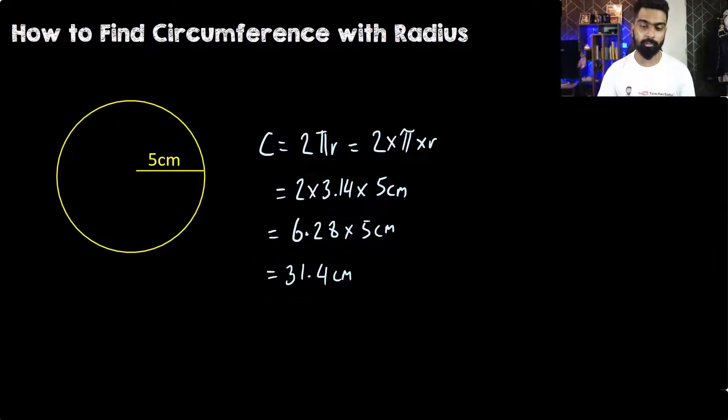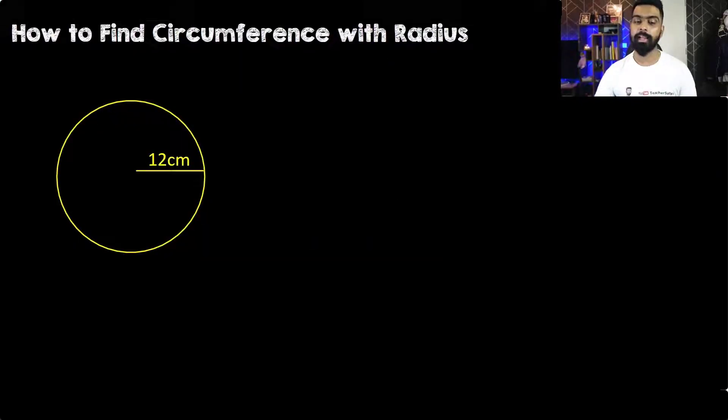Now let's go ahead and solve one more question. Let's start with the formula. The circumference is 2πr. In this case, the radius is 12 cm. So we have 2 multiplied with 3.14, multiplied with the radius which is 12 cm.